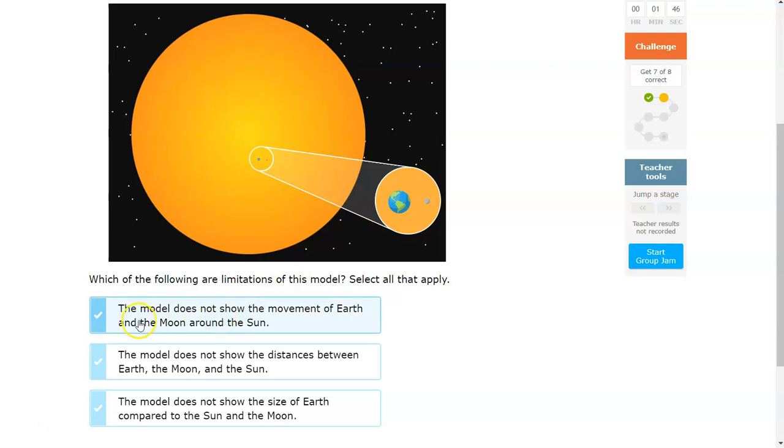Is it the fact that the model doesn't show movement of Earth around the Sun and the Moon? Is it the fact that the model does not show distances between Earth, Moon, and Sun? Or is it because that the model does not show the size of the Earth compared to the Sun and Moon?